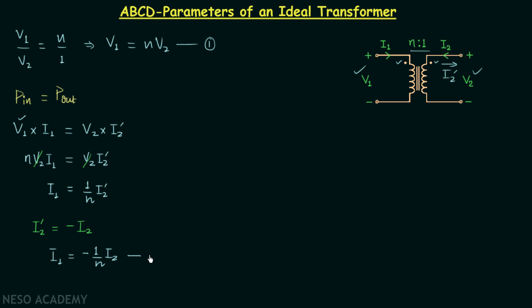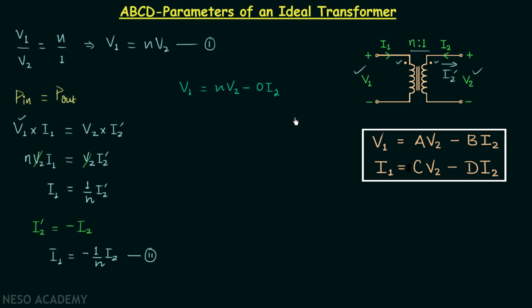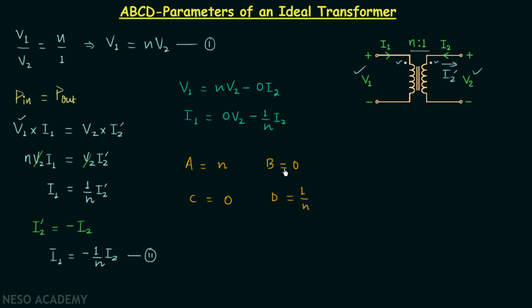We can write equation one as V1 = N·V2 − 0·I2, and equation two as I1 = 0·V2 − (1/N)·I2. Comparing these with the standard ABCD parameter equations, we find parameter A = N, parameter B = 0, parameter C = 0, and parameter D = 1/N. In this way we have obtained the ABCD parameters of an ideal transformer with turns ratio N to 1.